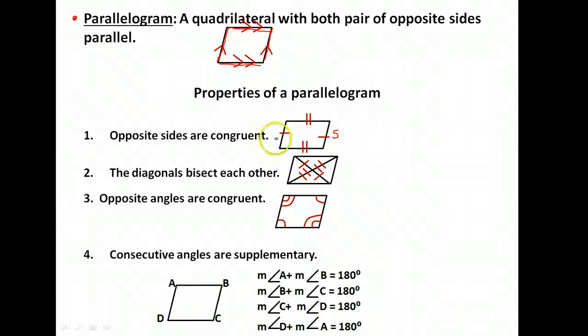So if this side is length 5, automatically this side is length 5. If this side is length 13, automatically this side is length 13. Now not necessarily are all four sides the same, but the opposites, the ones across the figure from one another, will always be congruent for sides.